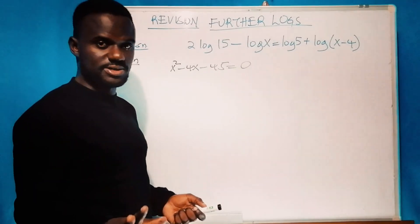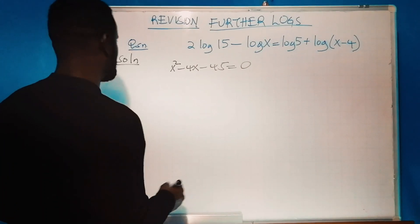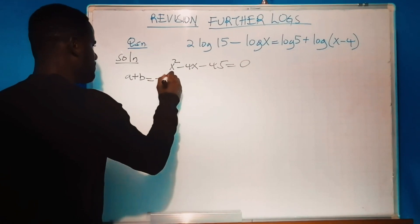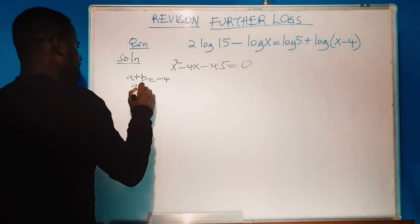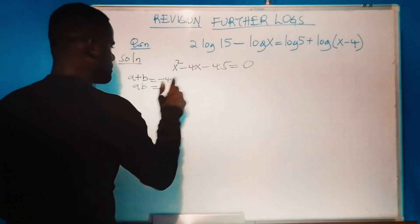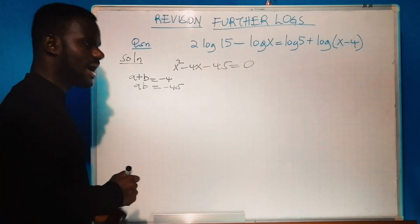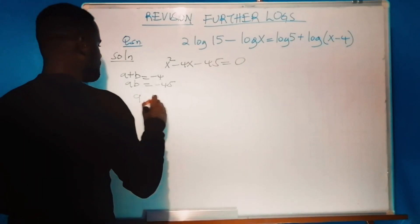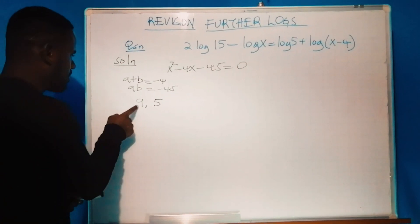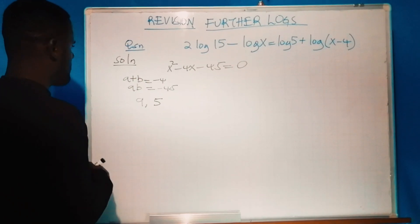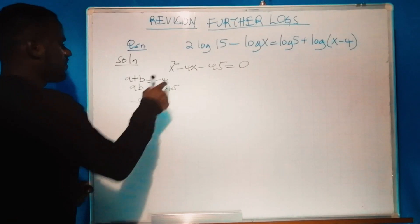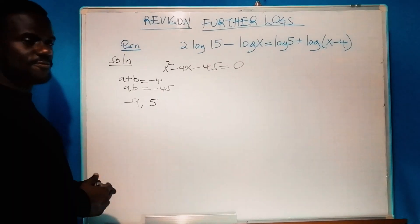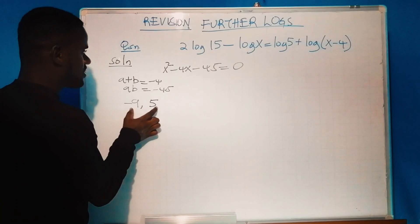To you, it might be different. Now let's look at the product-sum rule. Think of two numbers: when you add them, you get -4, and when you multiply them, you get -45. What are these numbers? They are 9 and 5. The real question is: 9 plus 5 equals 14, but -9 plus 5 equals -4, and -9 times 5 equals -45. So these are the numbers you plug in.